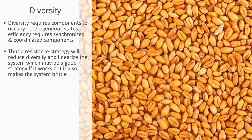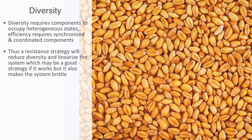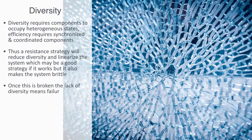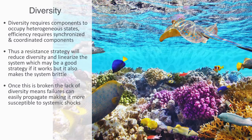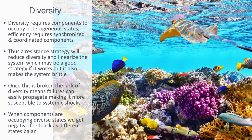This may be a good strategy if it works, but it also makes the system brittle, as we are creating a strong impermeable boundary condition to the system that, once broken, means the lack of diversity within the system will allow for some failure to easily propagate, making it more susceptible to positive feedback loops and systemic shocks. An adaptive strategy is predicated upon diversity, because with diversity, components are occupying heterogeneous states, meaning we will get negative feedback as different states balance each other out. This negative feedback makes the system less vulnerable to rapid failure propagation driven by positive feedback.